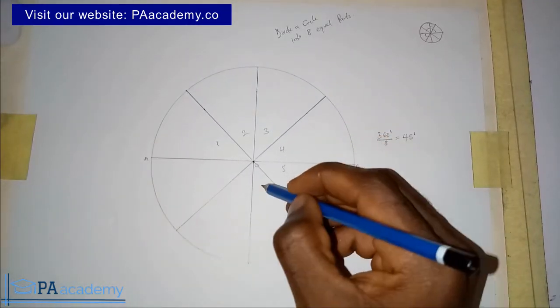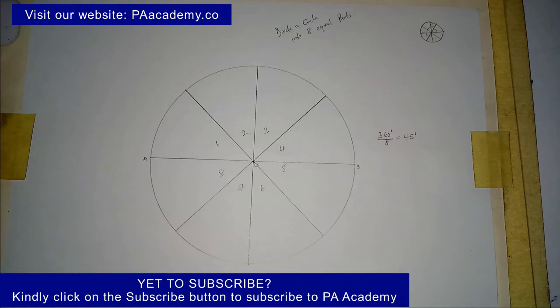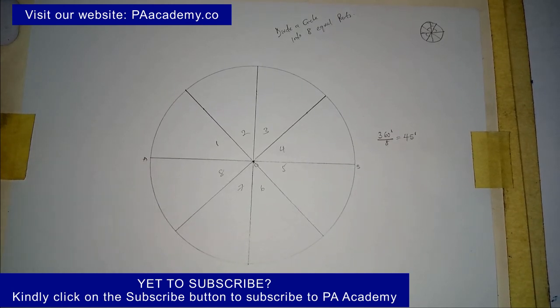If you found value in this video, please give it a thumbs up. Importantly, if you are yet to subscribe to our channel PA Academy, kindly click on the subscribe button. If you also want to know how to divide the circle into whatever number of parts, maybe into five, six, nine, ten, twelve and so on, kindly check the description of this video. You'll find a link to all those videos. You can also check our playlist on technical and engineering drawing. There are a lot of videos, especially if you offer technical drawing or engineering drawing. I believe there are a lot of videos there you'll find very helpful. So that is it guys. Thank you very much for watching, and I'll see you all in another video. Thank you.